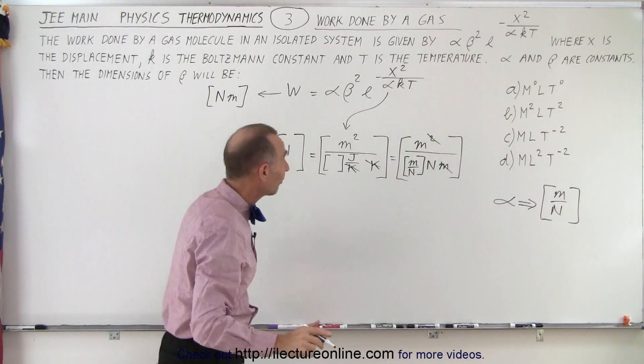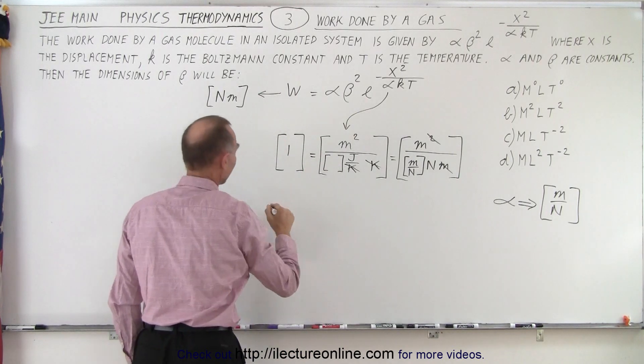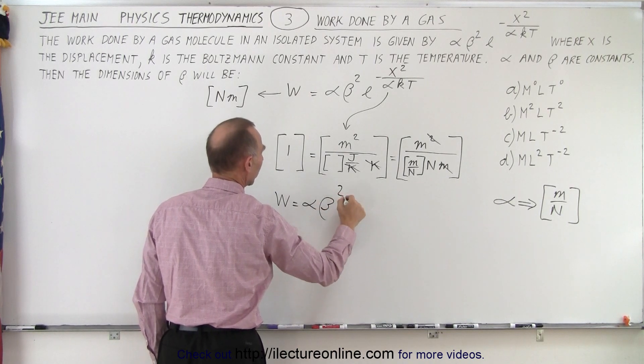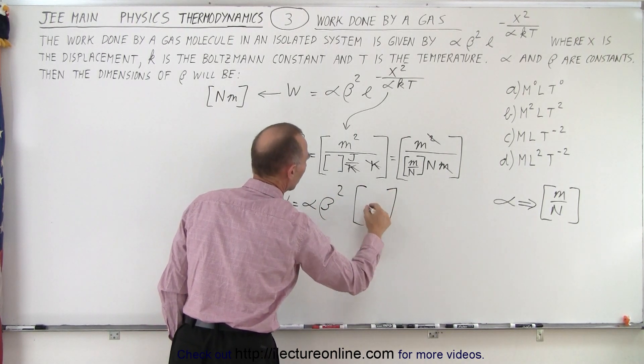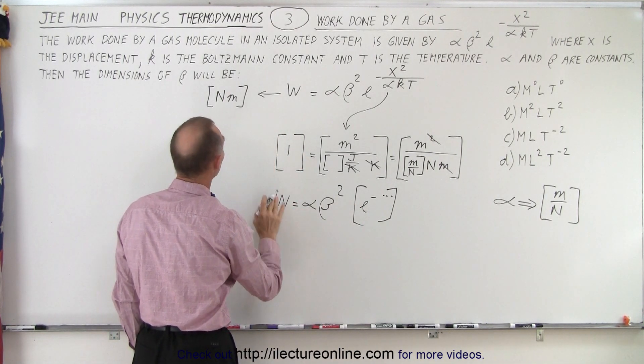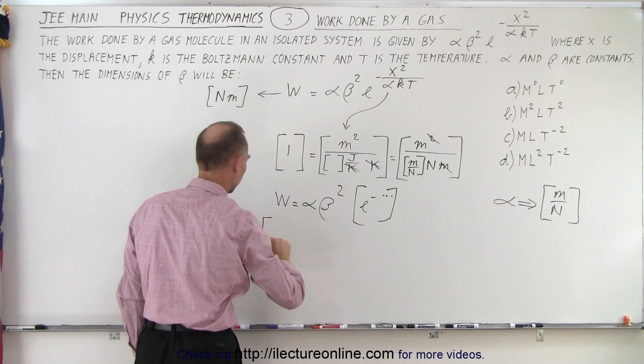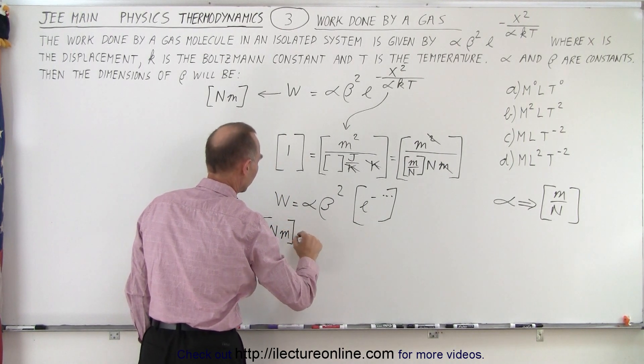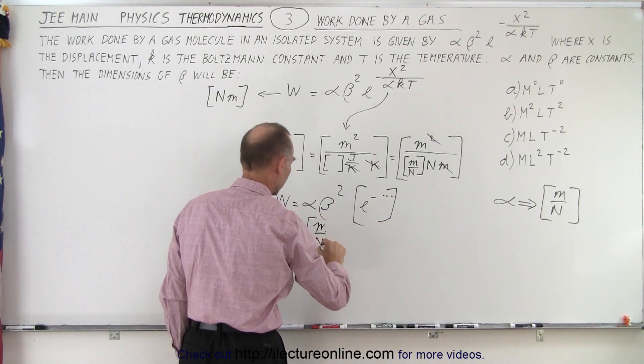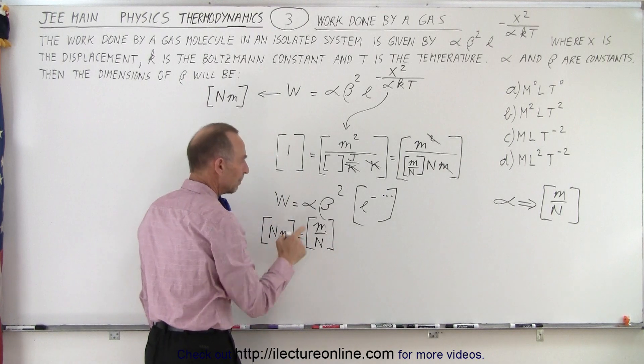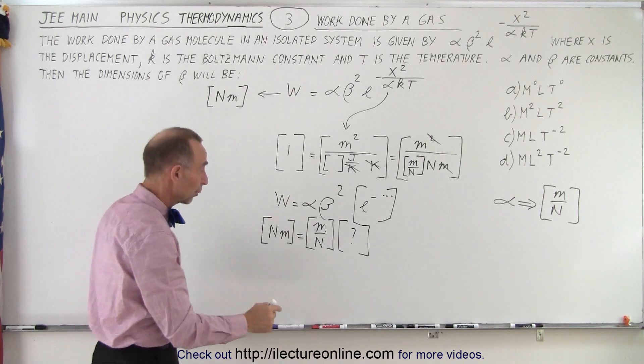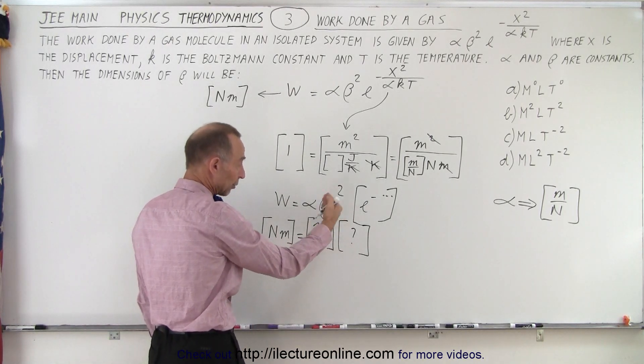Okay, now to find the units for beta, I can then say that work is equal to alpha times beta squared times e to that exponent, right? e to that exponent. But now, unit-wise, on the left side we have work done, which is Newton meters, is equal to alpha, alpha, and alpha is meters per Newton. And beta squared, well, now what we're trying to find is what beta squared is equal to, and of course once we find beta squared, we have to take the square root to find beta.